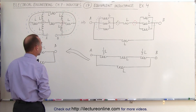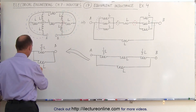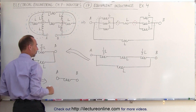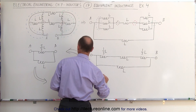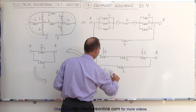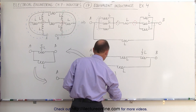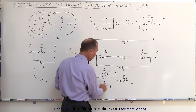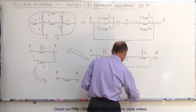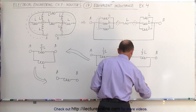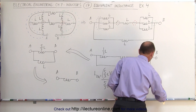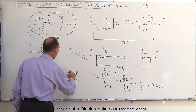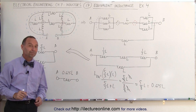Finally, here we have two inductors in parallel — we have to use the product over sum rule. So we redraw this as a single equivalent inductor from A to B. The equivalent total inductance is the product over sum: five thirds L times L, divided by five thirds L plus L. This becomes five thirds L squared divided by eight thirds L. The over-three terms cancel, and we end up with five eighths L, which is 0.625L. So the final equivalent inductance of the circuit is 0.625L. That's how it's done.